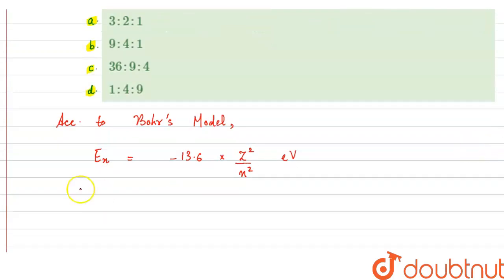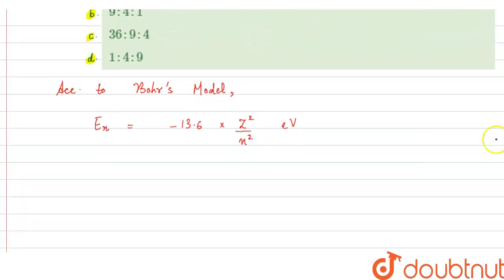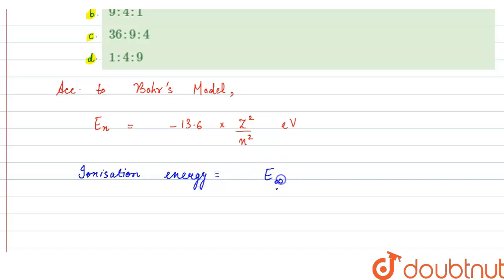Basically, the energy required to remove the electron is known as ionization energy. Ionization energy is equal to the energy of the electron in the infinite orbit minus the energy of electron in the nth orbit. Here E_infinity is equal to zero, so ionization energy equals minus E_n.